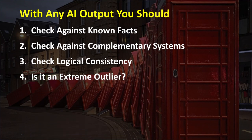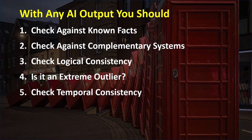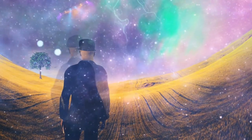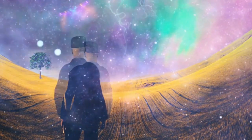4. Is it an extreme outlier? If the output suggests something extremely rare or unusual without substantial evidence, it might be a hallucination. Finally, 5. Check temporal consistency — if the AI system is generating time series data or predictions over time, inconsistencies or abrupt changes could be signs of hallucinations. If you suspect a hallucination, use any available channels to report it. AI developers will appreciate feedback that helps them improve their systems.